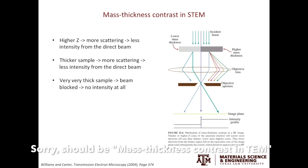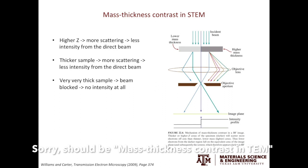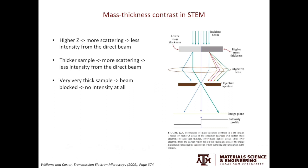The origin of mass thickness contrast really comes from the scattering theory we learned earlier. For higher Z samples, they scatter electrons more strongly, therefore there's less intensity in the direct beam, and they will appear darker in the image. Similarly, for thicker samples, there is also more scattering and less intensity from the direct beam, and they will appear darker. If the sample is super thick, the electron beam will not be able to go through, and there will be no intensity at all.